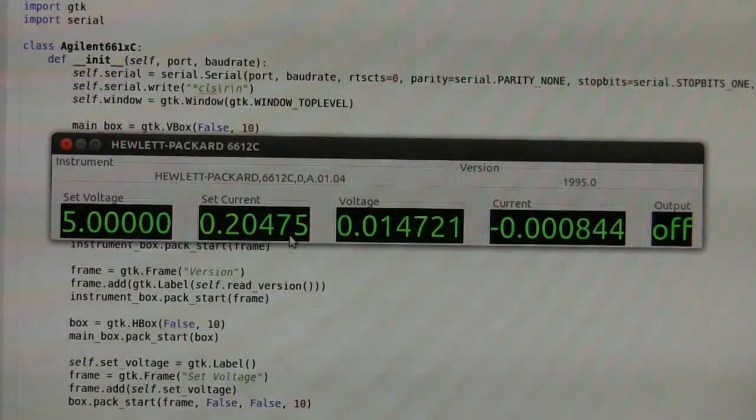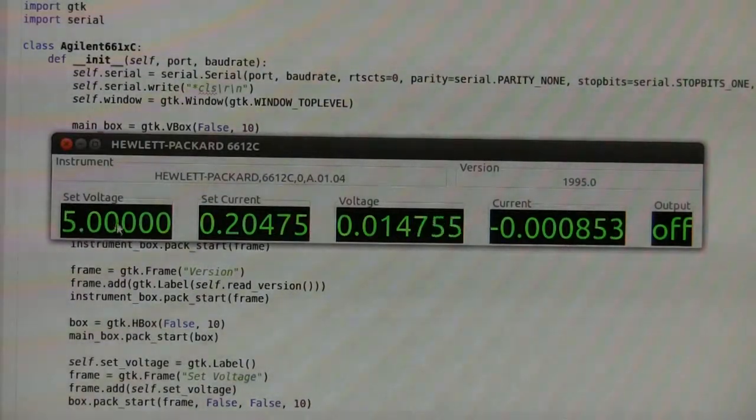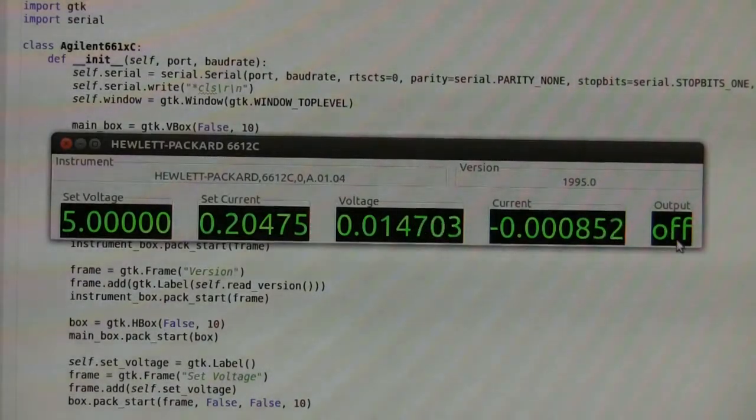And then there are five fields which are updated every so often. So first two are set voltage and current, and as you can see I set it to five volts before and this default current. And here is the meter and the status of the output, often off or on.